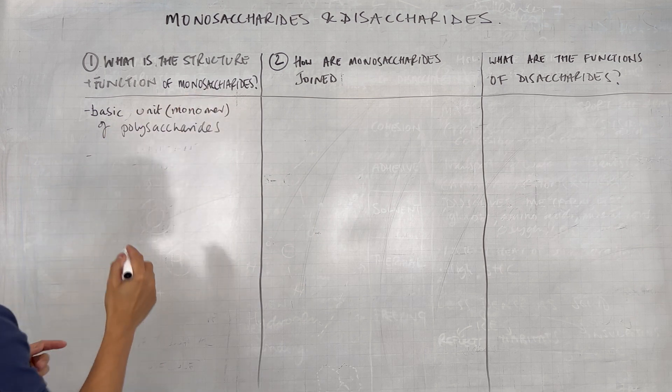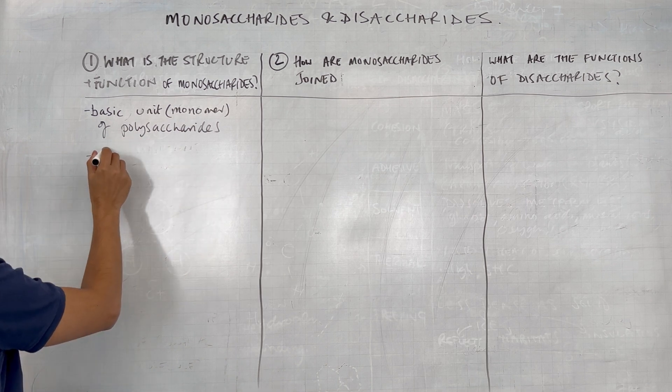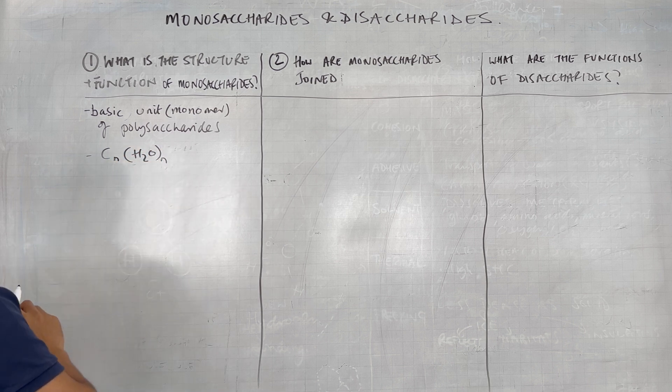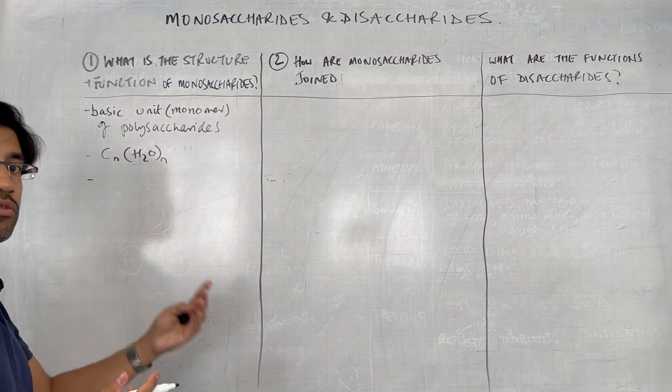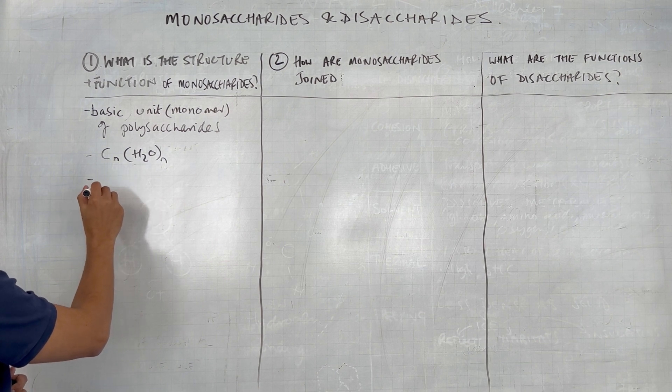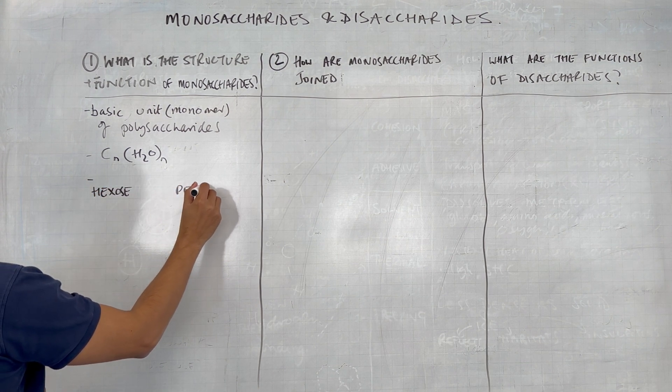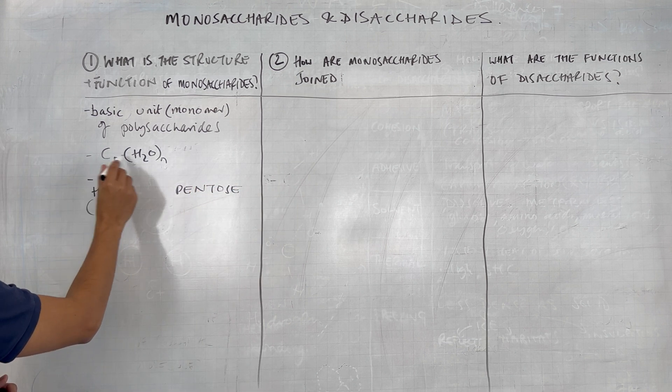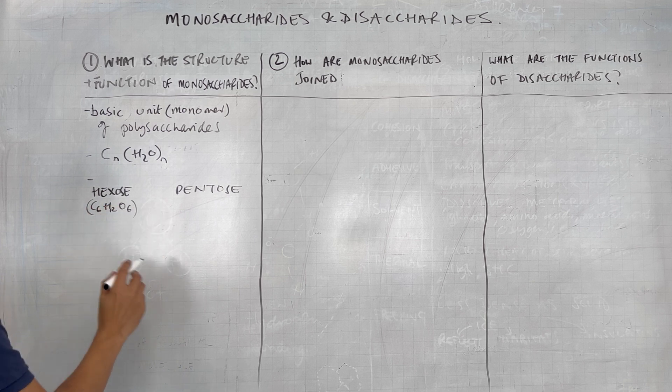So monosaccharides can come in two varieties, they can be hexoses. Remember, the general formula for carbohydrates is C, whatever number, and for every one carbon, you get a H2O. Now, hexoses, there's two kinds of monomer, hexoses and pentoses. So we have hexoses and we have pentoses. In terms of hexoses, what we're talking about is C6H12O6.